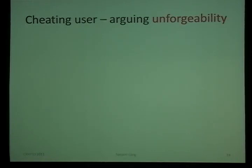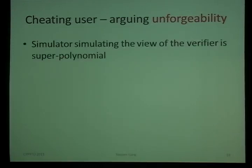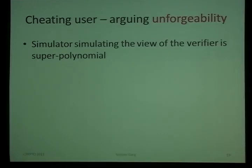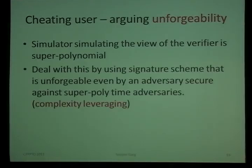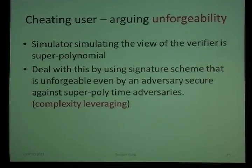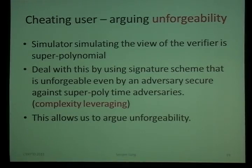The second problem is unforgeability — we do not want a user to be able to forge signatures on more messages than the number of interactions with the signer. To argue unforgeability, we reduce it to the unforgeability of the underlying signature scheme. However, we rely on a simulator running in super-polynomial time, which is problematic. This is handled by assuming a signature scheme that is secure against adversaries running in super-polynomial time — a well-known technique called complexity leveraging — allowing us to argue unforgeability.